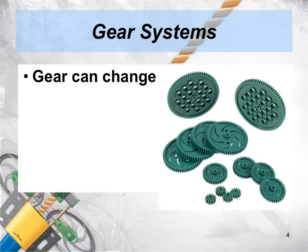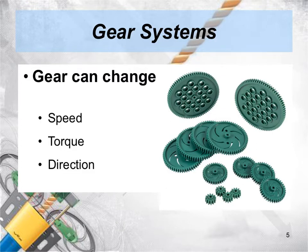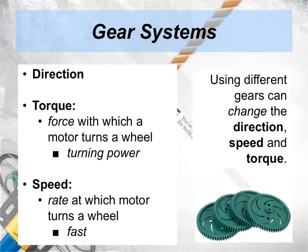Do you know what types of things gears can change? In this picture, we show some of the gears that are used on our VEX robot. We're going to be taking a look at three things that gears can change. Gears can change three things: speed, torque, and direction. And all those need to be changed in different situations when you're building your robot. Let's take a look at each one of these in a little more detail.